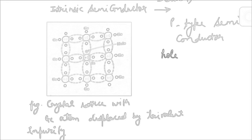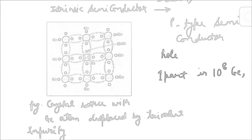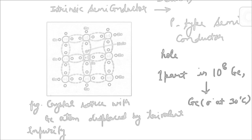For example, if a donor-type impurity is added at one part in 10 to the power 8 atoms of germanium, it will enhance the conductivity of germanium at 30 degrees Celsius by a factor of 12. So only one part of impurity in 10 to the power 8 germanium atoms can multiply the conductivity by a factor of 12.